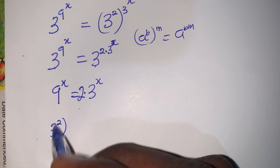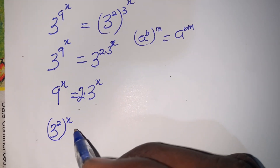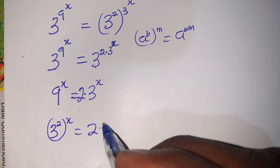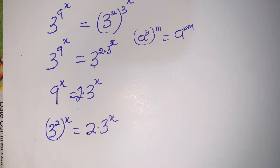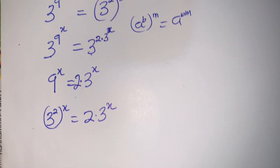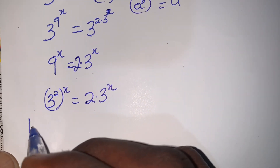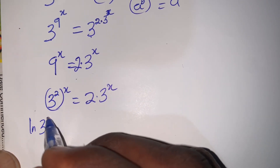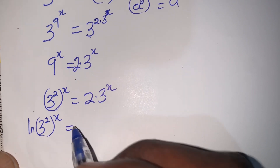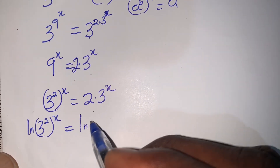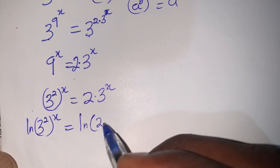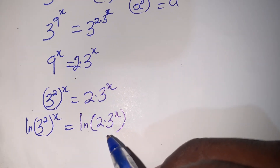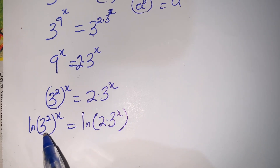I'll change 9^x to index form, so I'll have 3 squared exponent x, which equals 2 times 3^x. Now I'll introduce a natural log: ln of 3^(2x) is equal to ln of 2 times 3^x.